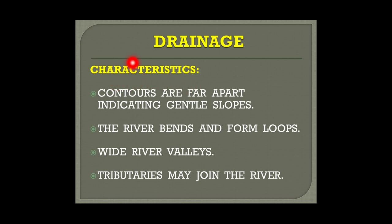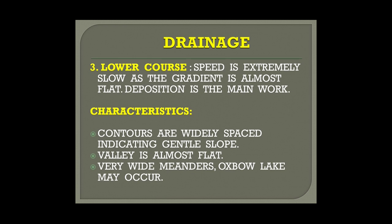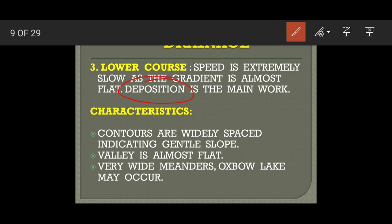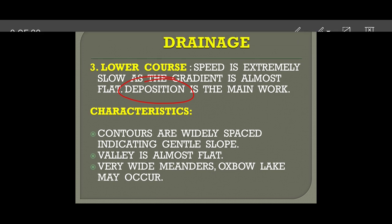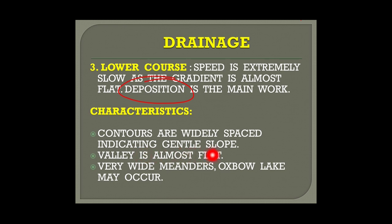In the second stage, contours are far apart indicating a gentle slope; the river bends and forms loops; wide river valleys are formed; and tributaries join the main river. In the third stage or lower course, speed is extremely slow as the gradient is almost flat and deposition is the main activity. Contours are widely spaced and elevation is not more than 300 meters above sea level — valleys are almost flat and very wide.